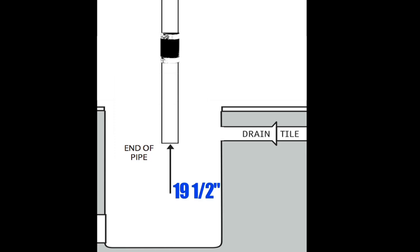Extend the discharge pipe so it ends 19 and a half inches from the bottom of the sump pit. Once this step is completed, it takes less than five minutes to finish the installation.